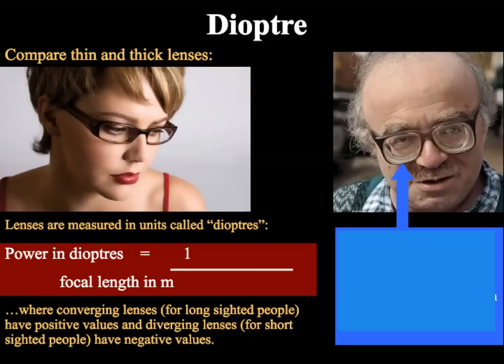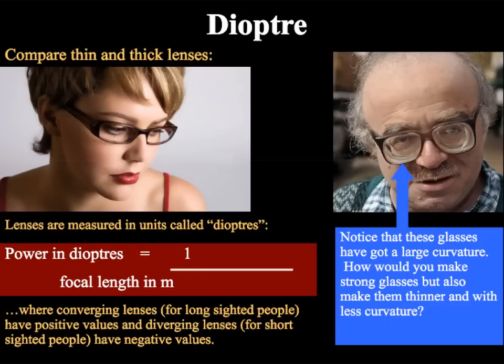If a converging lens is used the power in diopters will be positive. For a diverging lens it will be a negative value. Lenses which have much larger curvature and hence are thicker will be stronger than lenses which are much smaller.